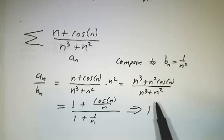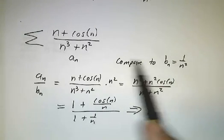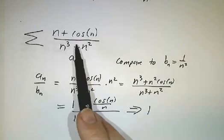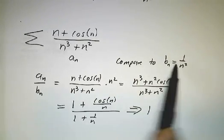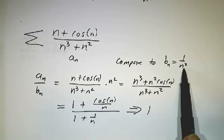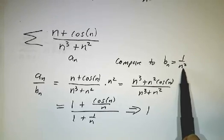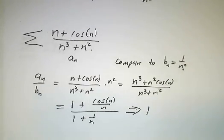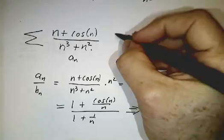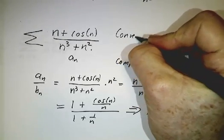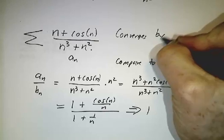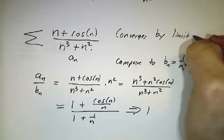So since the ratio approaches 1, that by the limit comparison test, either both series converge or both series diverge. Since the sum of 1 over n squared converges, it's p series. This also converges. So this converges by the limit comparison test.